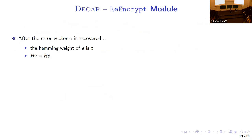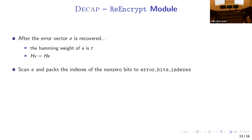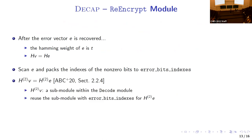In the decapsulation of Classic McEliece, after the error vector is recovered there are two validity checks: first, whether the Hamming weight of the recovered vector is t; second, whether H*v equals H*e. For the first check, they scan through the error vector extracting the Hamming weight and also pack the indices of non-zero bits into an error bit index vector. As specified in section 2.2.4, they reuse the encode module to compute H2*e using the error bit index as input.